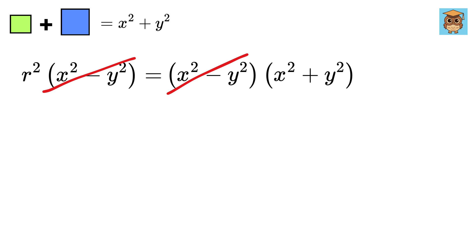Oh look! This also gets cancelled out and we are left with x squared plus y squared equals R squared.